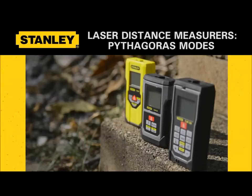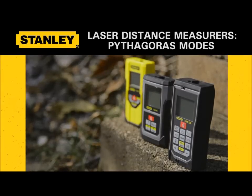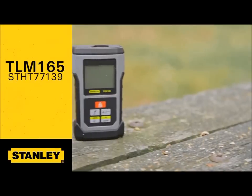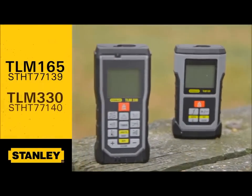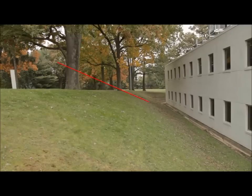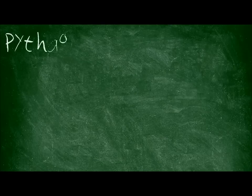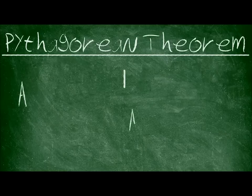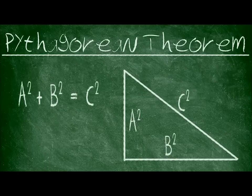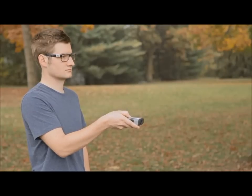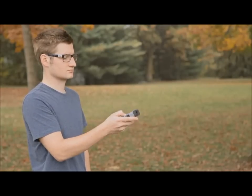Stanley's lineup of laser distance measures touts a variety of functions and applications. For difficult height measurements, the TLM-165 and TLM-330 allow you the ability to use the Pythagoras function to calculate a height measurement indirectly. The LDM's Pythagoras function uses the same math we learned in high school: a squared plus b squared equals c squared. This video will show you what to measure in order for the LDM to calculate your missing height.